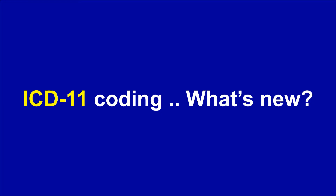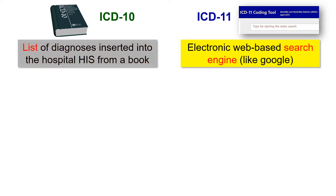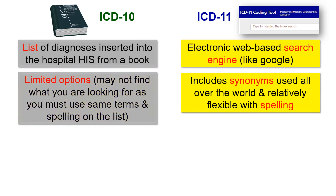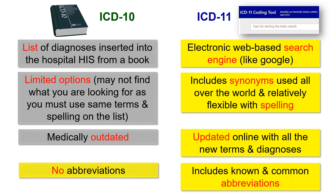We already have ICD-10, so why are we moving on to ICD-11? The ICD-10 list on your system was obtained from the ICD-10 Volume 1. ICD-11, on the other hand, is an electronic web-based search engine that works very much like Google. The options in the ICD-10 list were very limited and many complained they could not find the diagnoses they were looking for. ICD-11 includes synonyms and is very flexible with spelling. ICD-10 is medically outdated, whereas ICD-11 is updated online and new terms and diagnoses are added regularly. ICD-10 could not be searched using abbreviations, at least not the list on your system, whereas ICD-11 includes known and common abbreviations.